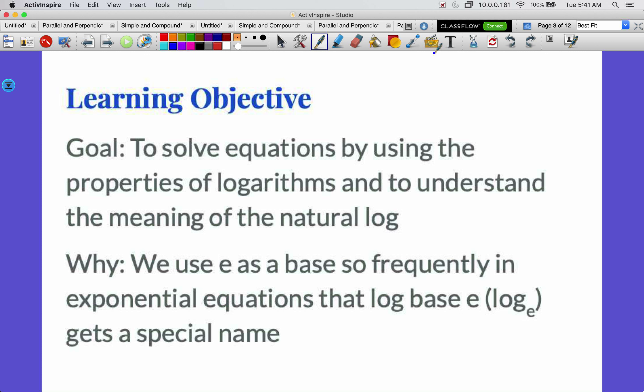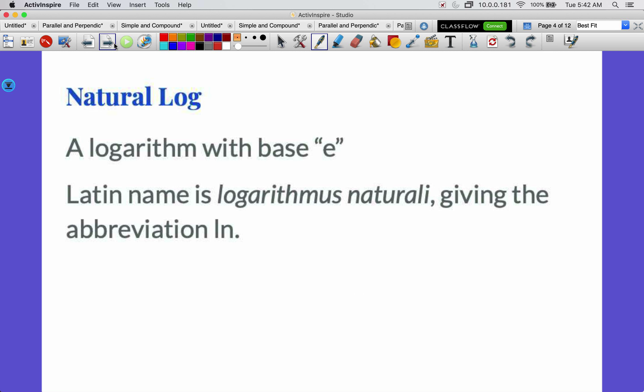Goal for today is to solve equations by using the properties of logarithms and to understand the meaning of the natural log. Why are we doing this? We use e as a base so frequently in exponential equations that log base e gets a special name. One of the places we see it the most is that continuously compounded interest formula. That is an exponent with e as the base, and if we're ever trying to solve that, we've got to use log base e. So in our notes, write down that the natural log is a logarithm with base e. The Latin name is logarithmus naturali, giving the abbreviation ln. And on the calculator it's a capital ln, but when we write our math we almost always do a lowercase ln.